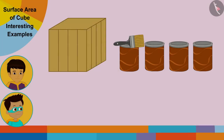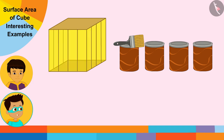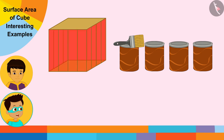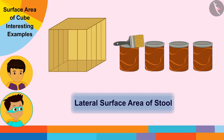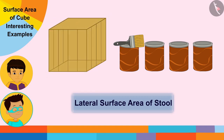But we have only four boxes of paint, so what shall we do now? Don't panic, Manas — let us paint only the vertical surfaces of this stool. Maybe we can paint these surfaces using four boxes of paint. The vertical surfaces of this cubic stool indicate its lateral surface area, which means the sum of the areas of these surfaces will be equal to the lateral surface area of this cubic stool.